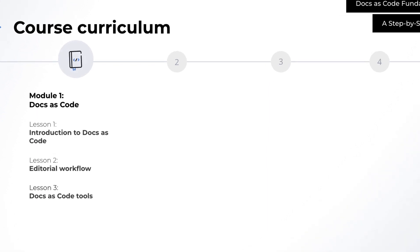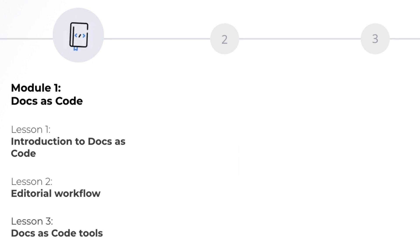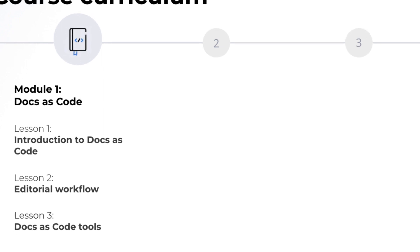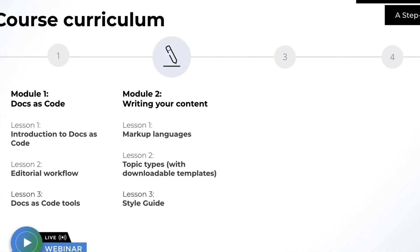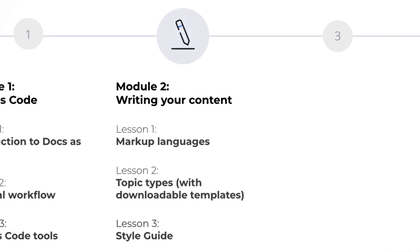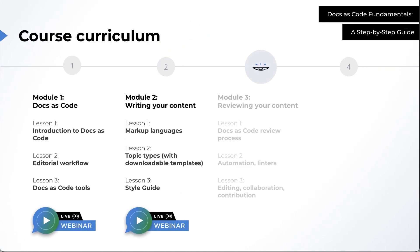Module 1 covers basic Docs as Code concepts, the editorial workflow, and essential tools. You can learn as you go, and no setup is required. Module 2 focuses on clear documentation content, exploring markup languages, documentation topics, and style guides.